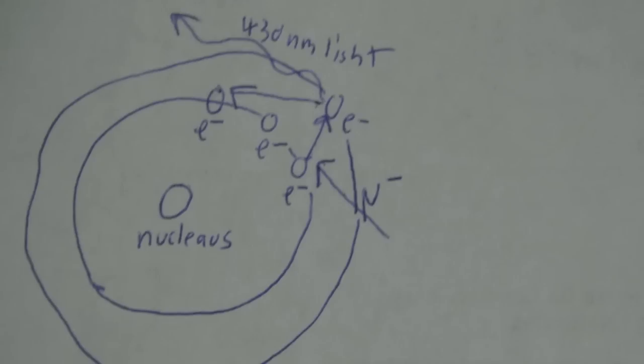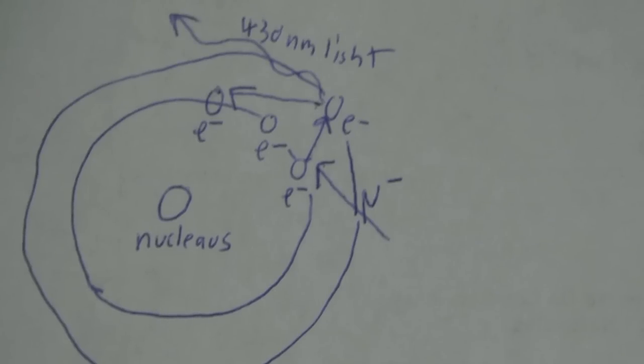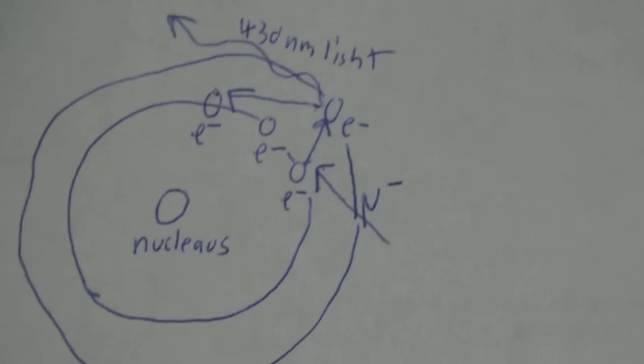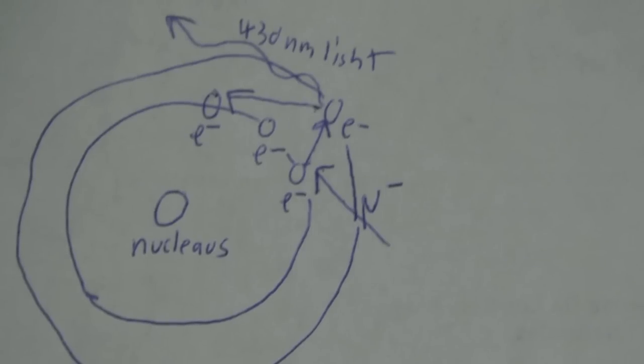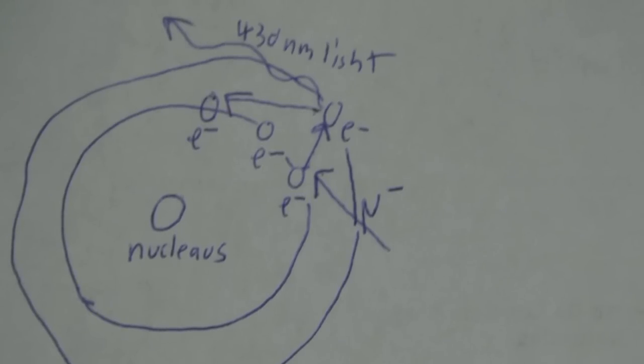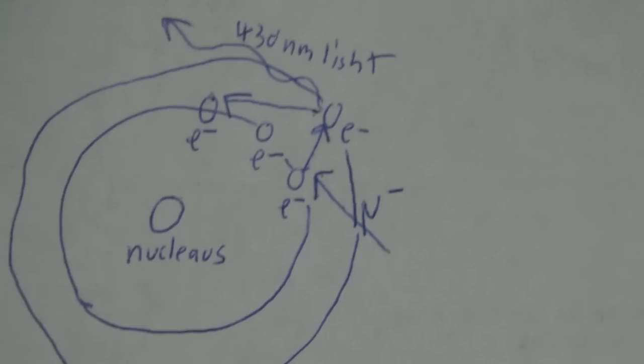The reason that it's the same frequency light every time is because the electrons can only jump up to specific levels in the atoms. You can look at the spectroscopy video I had a while ago. But in the scintillator plastic, the electrons can only jump up to a specific energy level.